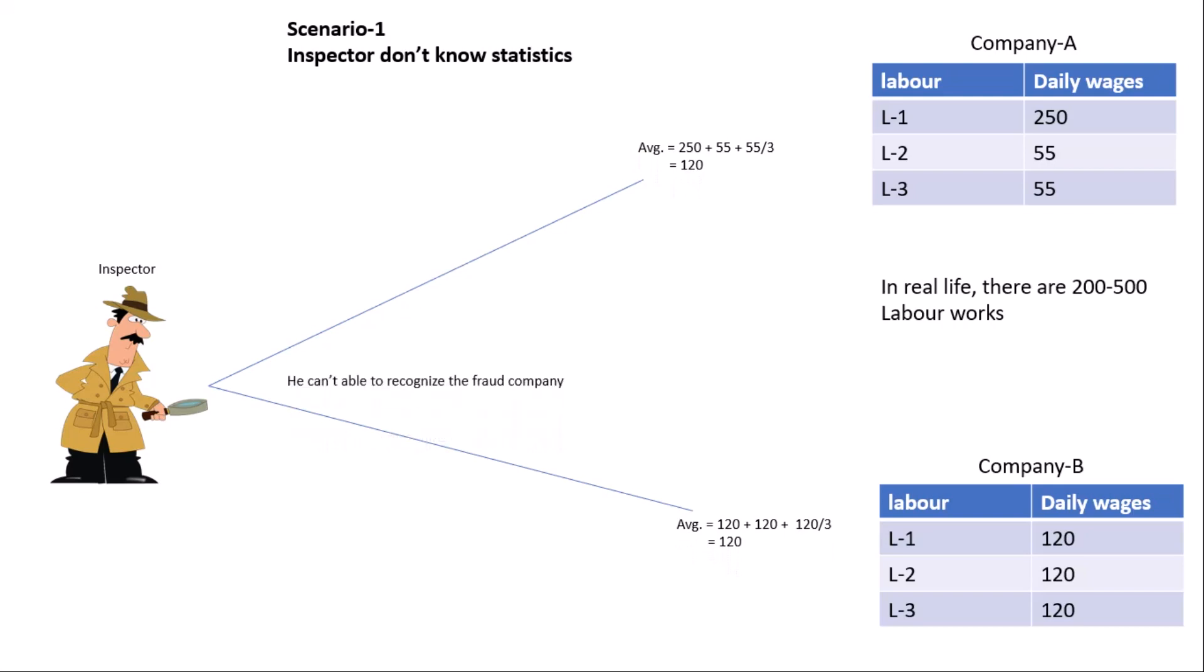As you can see, Company A is doing the fraud work because there are two laborers, Labor 2 and Labor 3, who don't get the minimum 100 rupees.